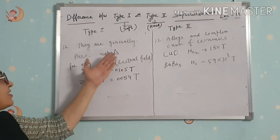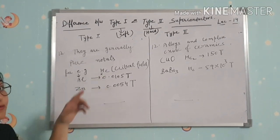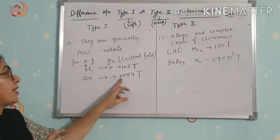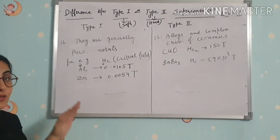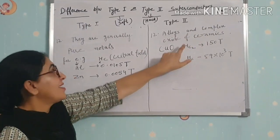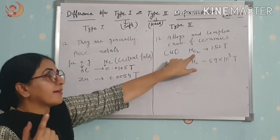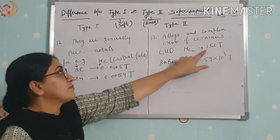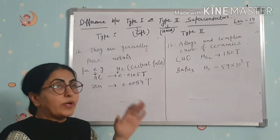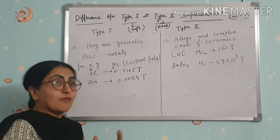Twelfth and final difference: Type 1 superconductors are generally pure metals — for example, aluminum, zinc, and mercury — and the critical field required is very low, e.g., 0.0105 tesla for aluminum and 0.0054 tesla for zinc. Type 2 superconductors are generally alloys and complex oxide ceramics — for example, CuO-based compounds with a high critical field of 150 tesla, and BaBi3 with a field of 59×10³ tesla. Because a high field is required, Type 2 superconductors have wider technical applications.